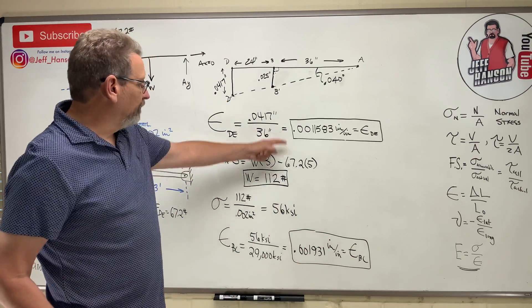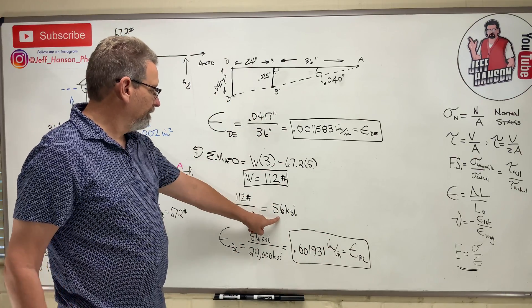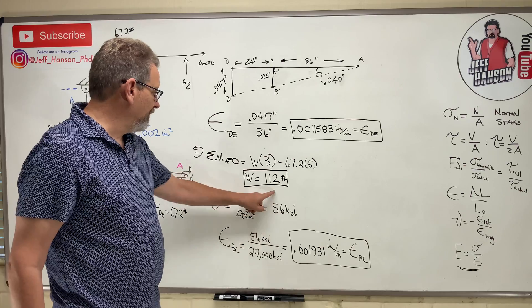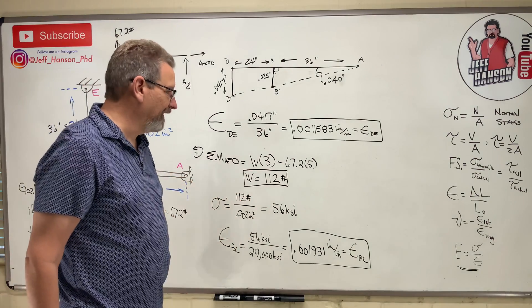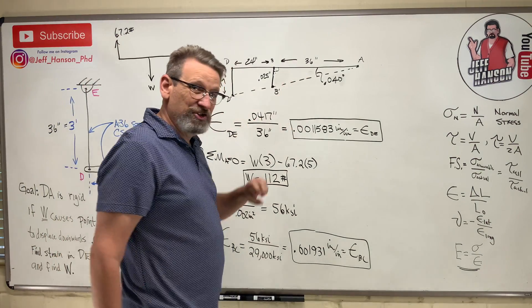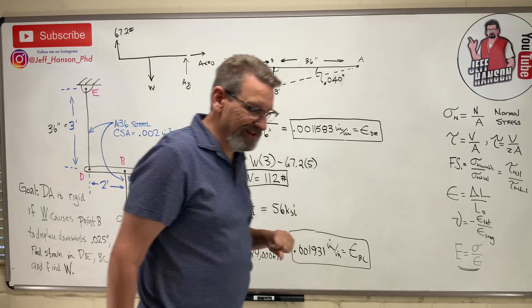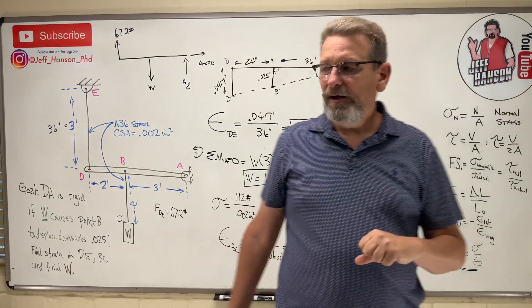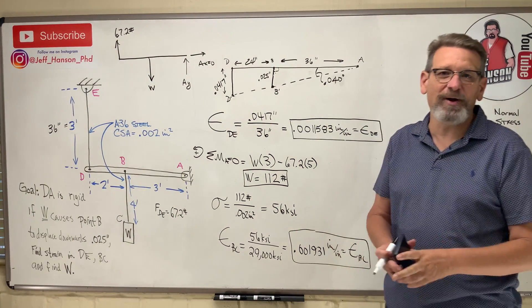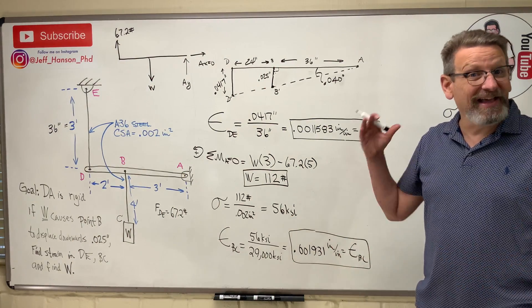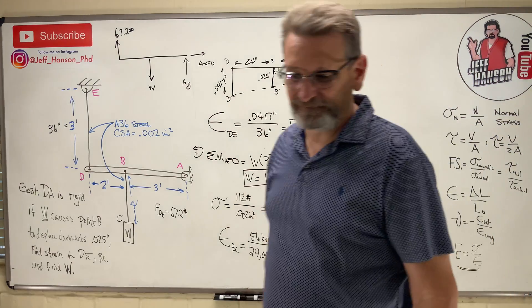So there you go — we found the two strains and the weight W, and we learned about the small angle assumption along the way. All kinds of new stuff in that problem. Hope that helps — see you next time.